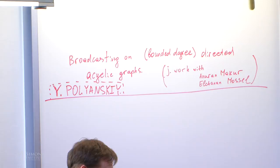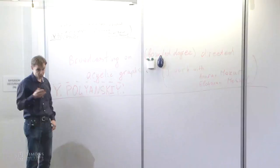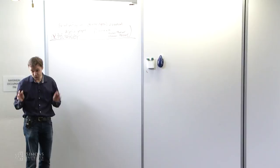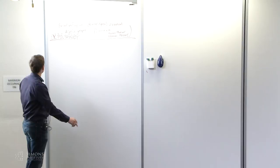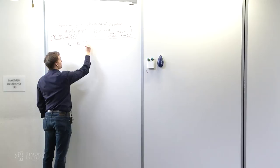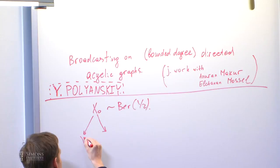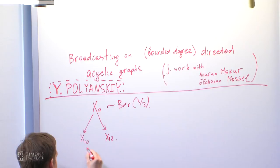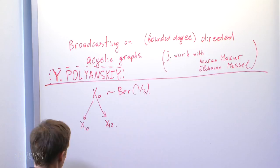This is joint work with my student Anurang Makur at MIT and Professor Elkanah Mossel. The title is Broadcasting on Unbounded Degree Directed Acyclic Graphs. Let me start by formulating the problem. We will have one bit, x0, which is uniformly distributed. Let me first draw things and then explain what they mean. So we have a directed acyclic graph, and I will call this horizontal stretch as layers.